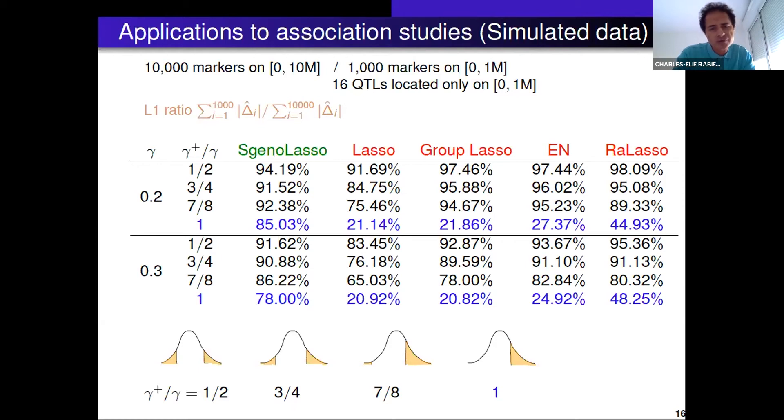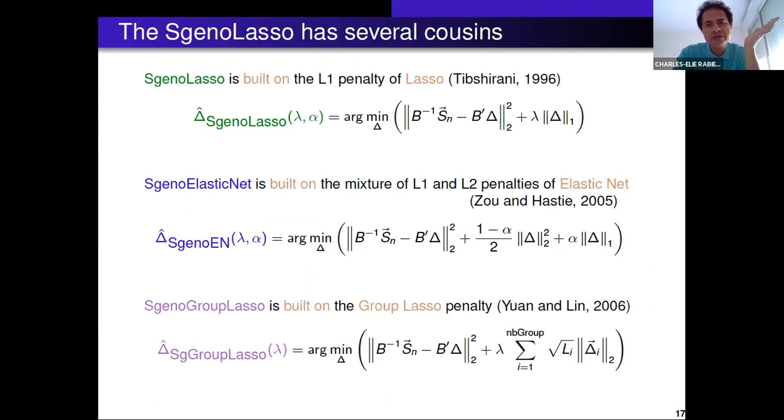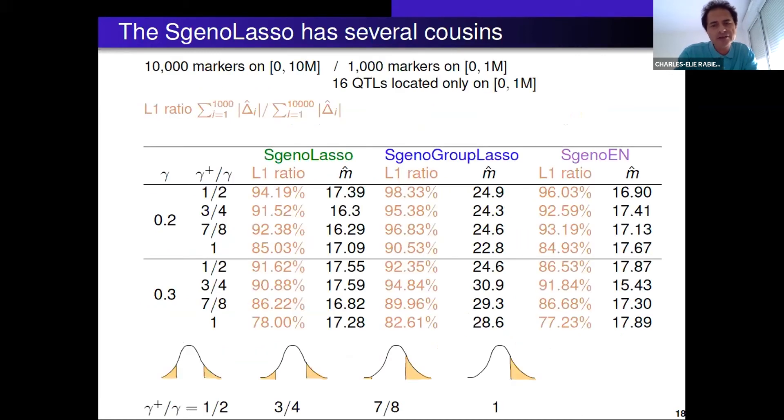As soon as you include a few worst individuals, all the methods behave the same way. It's linked to the paper of Brandaris and Bernardo. You can decline the SG no lasso in other versions. There is SG no elastic net which includes L1 and L2 penalty, SG no group lasso for penalty by group. On the same simulated data we had the same behavior - all the cousins work when we genotype only the best individuals.